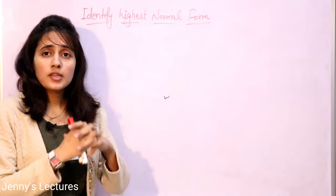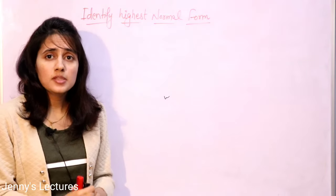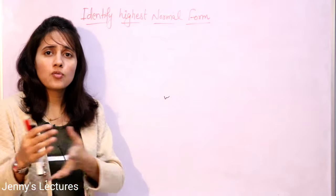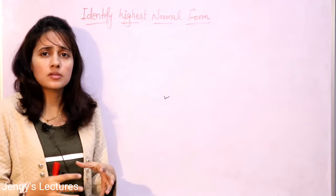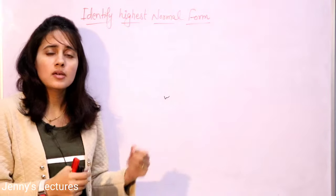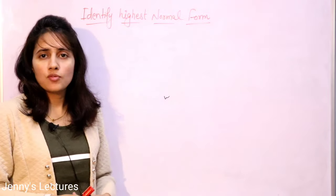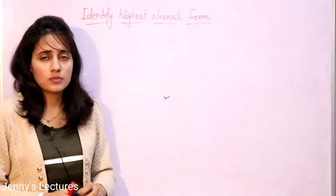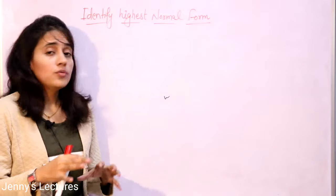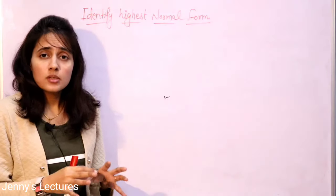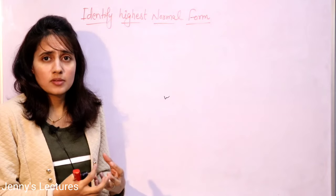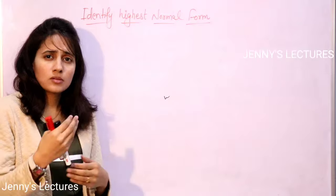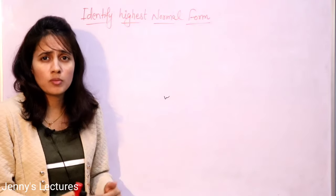We have already discussed with the help of examples what is second normal form, what is third, what is BCNF, and how to identify that a particular given relation is in second, third, and BCNF — all the rules and requirements for a relation to be in those normal forms. We discussed simple examples just to get you familiar with the basic concepts.